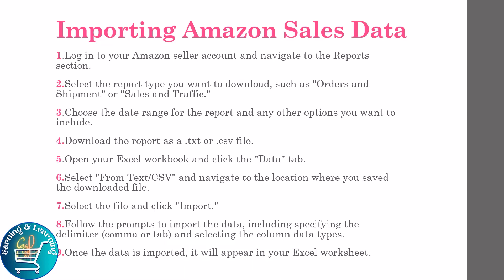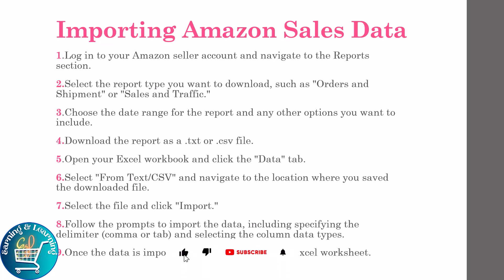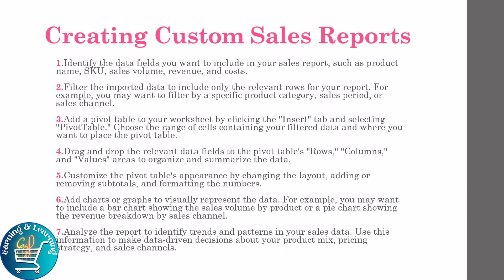Open your Excel workbook and click the Data tab. Select From Text/CSV and navigate to the location where you saved the downloaded file. Select the file and click Import. Follow the prompts to import the data, including specifying the delimiter — comma or tab — and selecting the column data types. Once the data is imported, it will appear in your Excel worksheet.